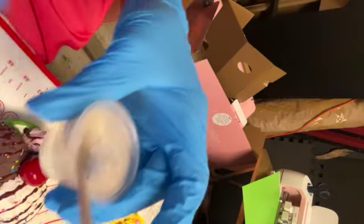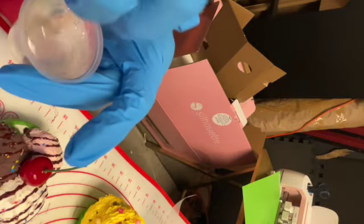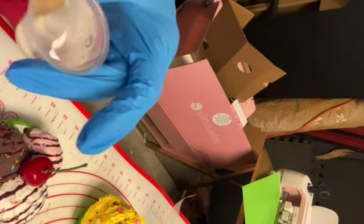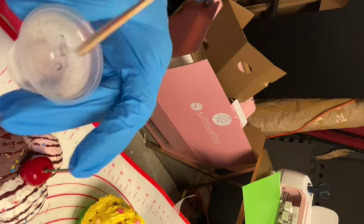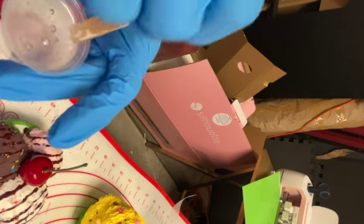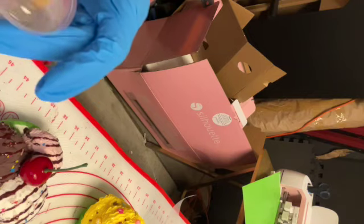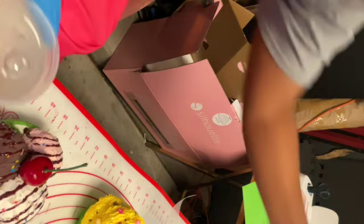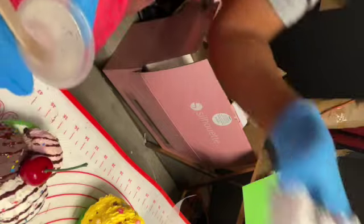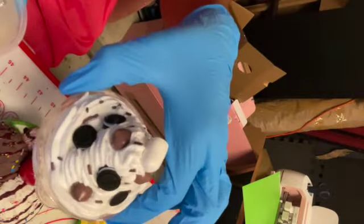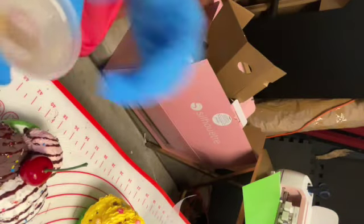I have the epoxy. So normally I would do 10 ml's, meaning five ml's of part A, five ml's of part B. However, because I plan on using the remainder of the epoxy to make some chocolate drizzle to cover this topper, I poured a little bit extra in here.